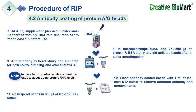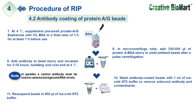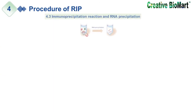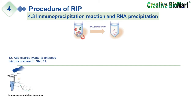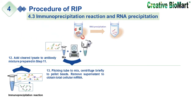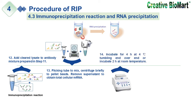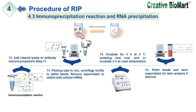Step 4.3: Immunoprecipitation reaction and RNA precipitation. Eleventh, resuspend beads in ice-cold NT2 buffer. Twelfth, add cleared lysate to antibody mixture prepared in step 11. Thirteenth, flick tube to mix and centrifuge briefly to pellet beads; remove supernatant to obtain total cellular mRNA. Fourteenth, incubate for 4 hours at 4°C tumbling end-over-end, or incubate 2 hours at room temperature. Fifteenth, pellet beads and save supernatant for later analysis if desired.